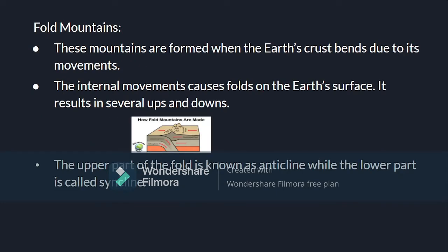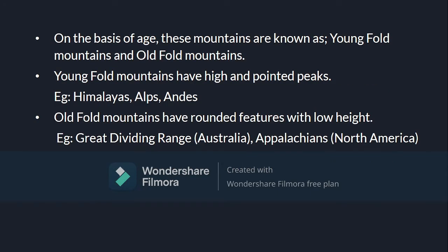Fold mountains are formed when the earth's crust bends due to its movements. The internal movement causes folds on the earth's surface, resulting in several ups and downs. The upper part of the fold is known as anticline, while the lower part is called syncline. On the basis of age, there are young fold mountains and old fold mountains. Young fold mountains have high and pointed peaks — for example, the Himalayas. Old fold mountains have rounded features with low height, like the Aravali Ridge.